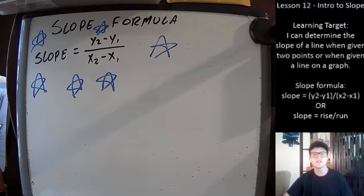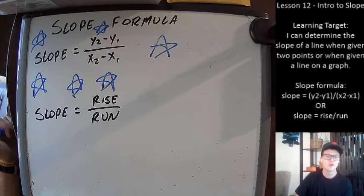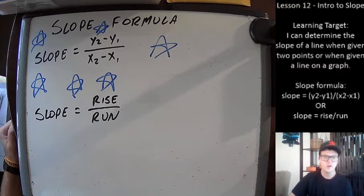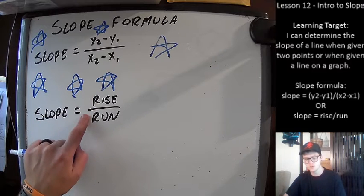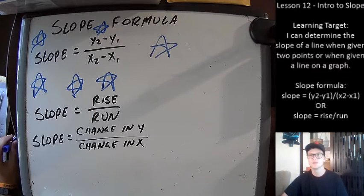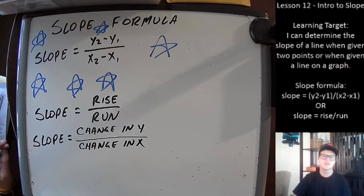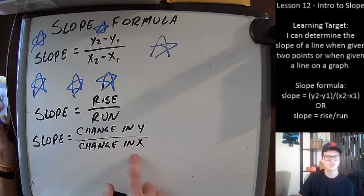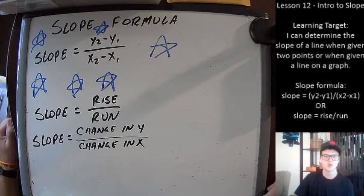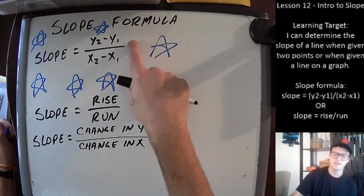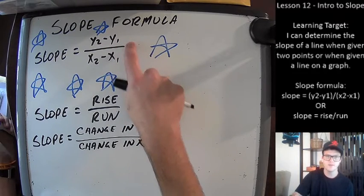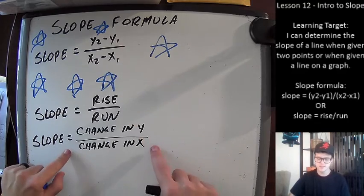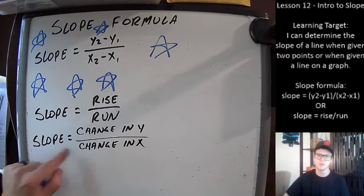There are a few variations of the slope formula. The first we've already talked about: rise over run — the distance the thing rises or falls over the distance it runs left or right. Sometimes you'll also see it written as 'slope equals the change in y over the change in x.' This is similar to what we started with — we're just subtracting one y value from the other to find the difference, and the same for x.